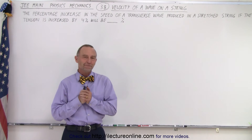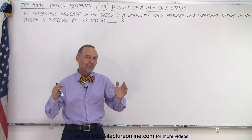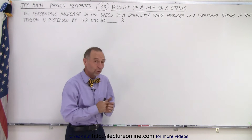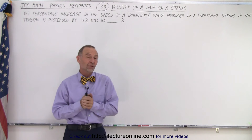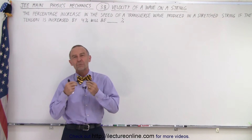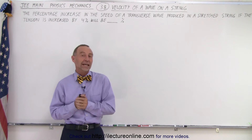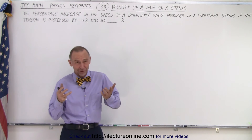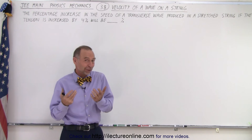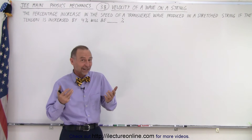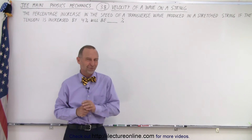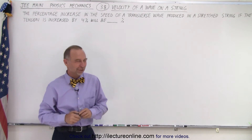Welcome to our Lecter Online. Here we're in the section of the test where we're not given a multiple choice of answers. We're simply given a question and you're supposed to find the numerical value of the answer. One of the problems, of course, is once you get your answer, you're not sure if it's correct or not, because you have nothing to compare it to. So that makes it a little bit more difficult.